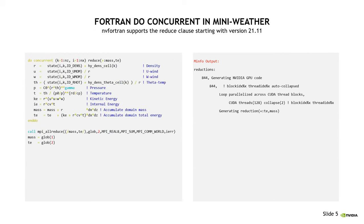Starting in 21.11, we support the reduce clause in do concurrent. On the left you can see do concurrent with reduce — a reduction on variables `mass` and `PE`. This gives you a lot of capabilities. Our compiler sometimes finds reductions automatically, but it's good to have a specification that actually supports that. It doesn't hurt to add them even if our compiler can find them automatically, because other compilers may not be able to. This is more conformant code to the spec now, and our info messages confirm that we will generate a reduction.